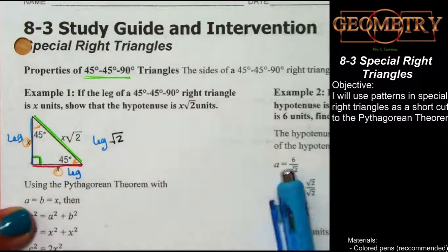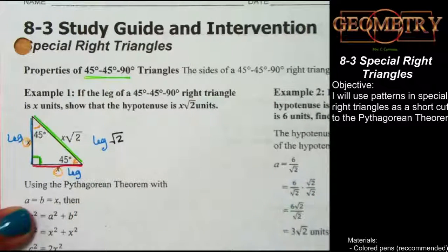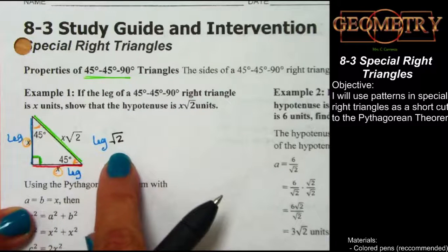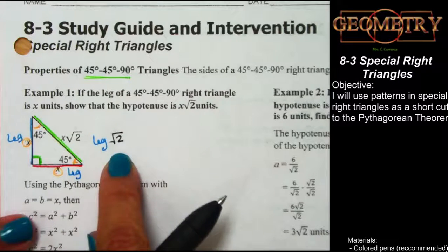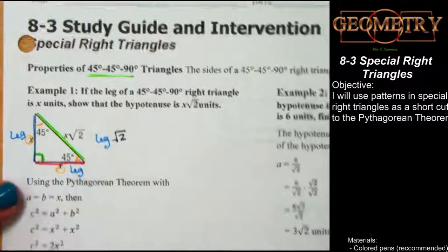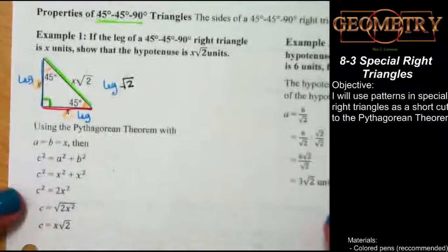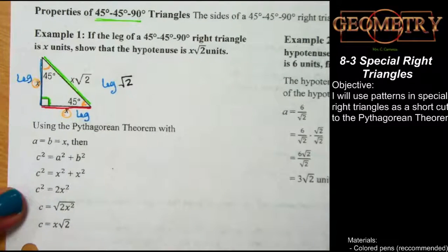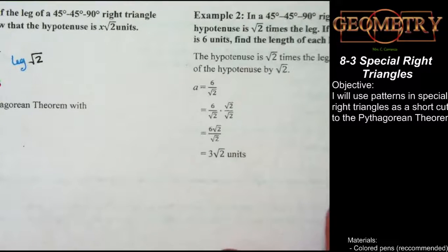Don't overthink it — just whatever the measurement of the leg is, the hypotenuse is that number times the square root of two. If you need to see how that works, here it is using the Pythagorean Theorem, and here it is with some numbers.